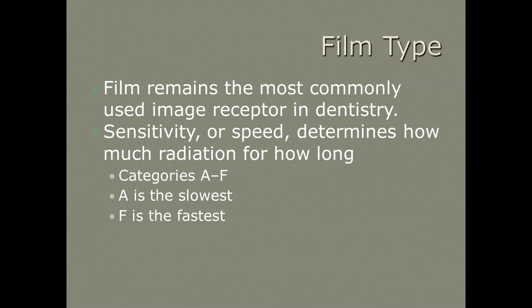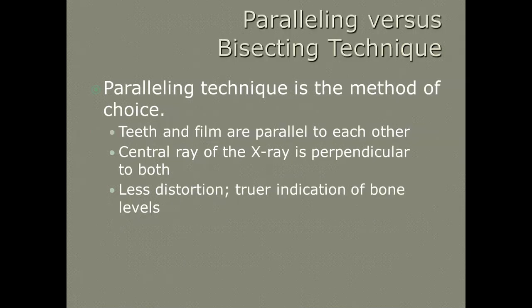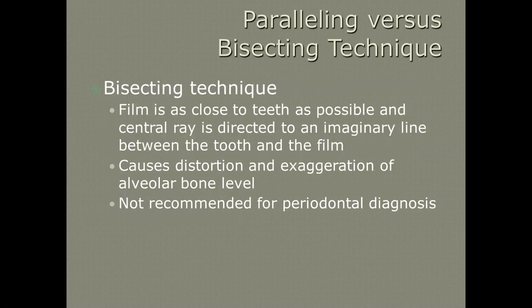Film remains the most commonly used image receptor in dentistry, though that depends on where you are in the country. Sensitivity or speed determines how much radiation and for how long the patient needs to be exposed — they have categories A to F; the higher on the alphabet the faster the speed, and F is currently the fastest dental speed film. We use paralleling technique as the method of choice — it gives us the least amount of distortion, and the central ray is perpendicular to the long axis of the tooth.